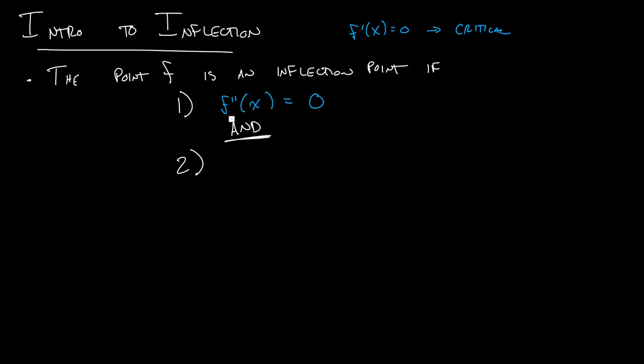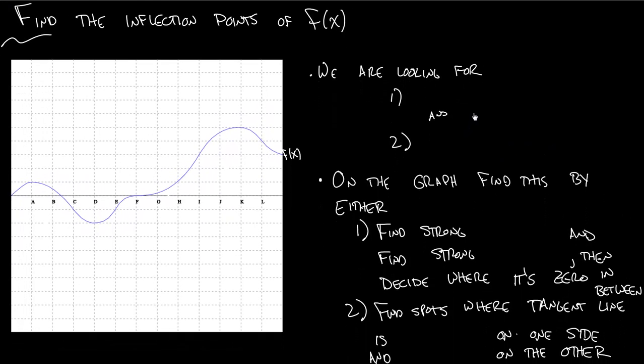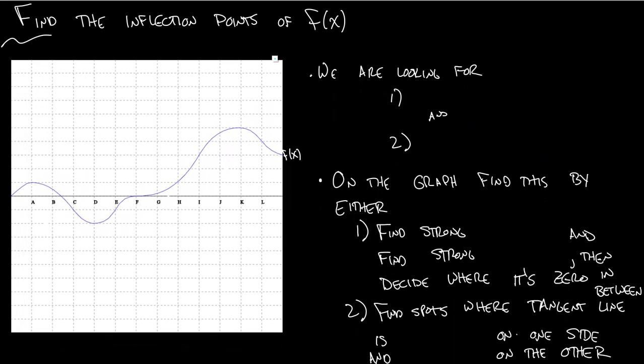Rather than just being f double prime of x being equal to 0, we want f double prime of x to change sign. And this won't come up very often, but I will show an example where it does come up in these videos. But for now, let's just figure out how we can find the inflection points of f of x, this graph of f of x here. And so remember, just like from what we said above,